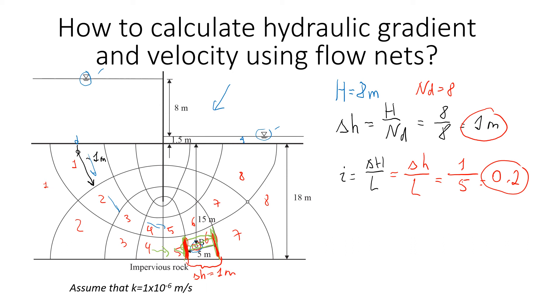Now we're going to find the velocity. To find the velocity, we're going to use this formula, which is k times i. The coefficient of permeability is provided, so in this case we can rewrite that velocity is equal to 1.6 times 10 to the power of negative 6 multiplied by 0.2, which will give us 0.32 times 10 to the power of negative 6 meters per second. Thanks.